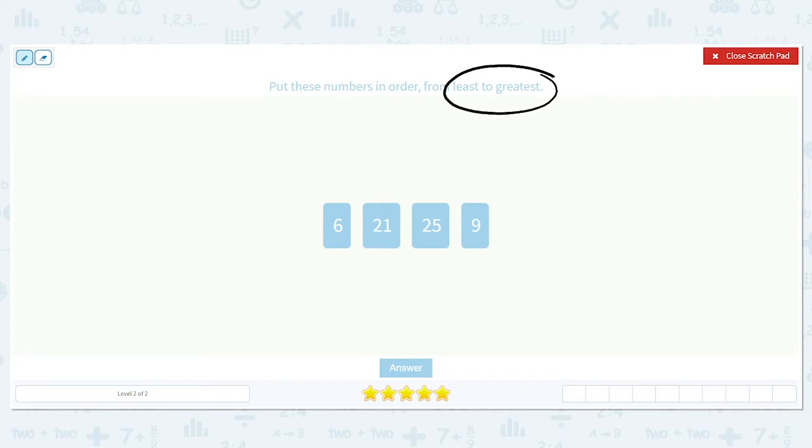I have 6, 21, 25, and 9. So when I think of putting numbers in order from least to greatest, I think of age. I'm going youngest to oldest. So which one of these numbers would be the youngest? 6, 21, 25, or 9? 6 is the youngest.